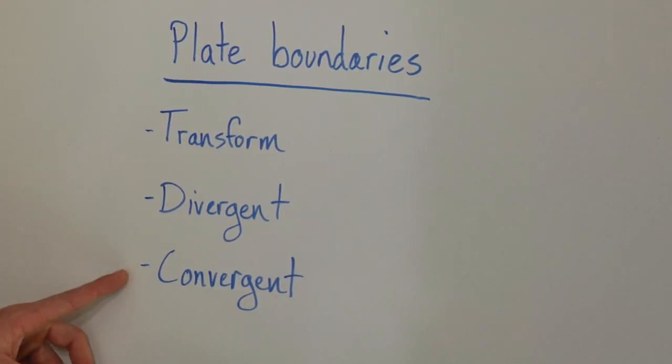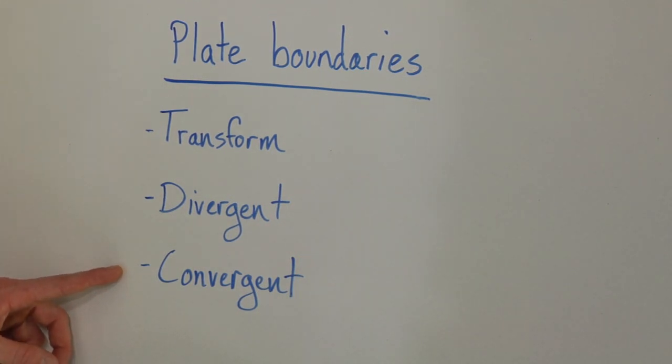Our third type of plate boundary are convergent boundaries. These are places where two plates actually collide and come together. When this happens, if they're a continental and oceanic plate — or if they're both oceanic plates — one will subduct or go under the other. The oceanic plate always does this because it's denser and thicker, so it subducts. A common place this occurs is along the Pacific Northwest Coast and the entire western side of South America, where the oceanic plate goes under the continental plate and as a result you form mountains.